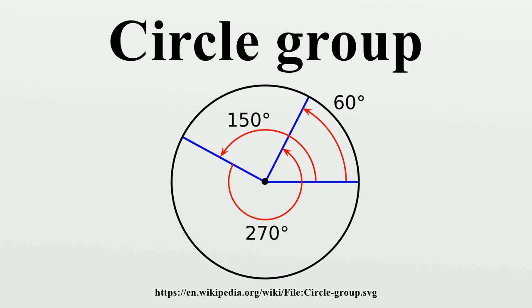Moreover, since the unit circle is a closed subset of the complex plane, the circle group is a closed subgroup of C×. One can say even more. The circle is a one-dimensional real manifold and multiplication and inversion are real analytic maps on the circle. This gives the circle group the structure of a one-parameter group, an instance of a Lie group.